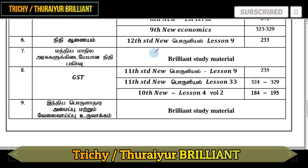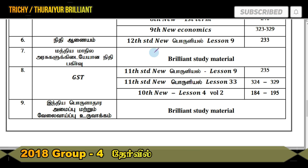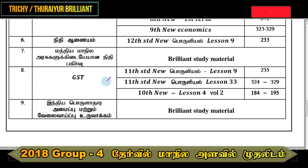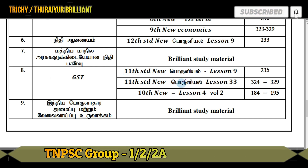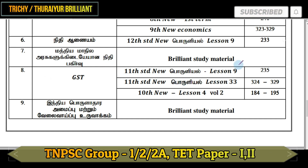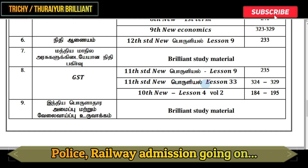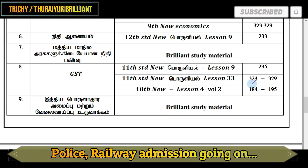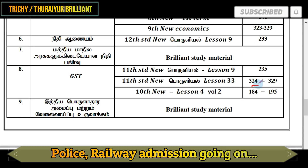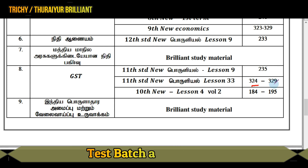In the description, we are going to do the number. For the GST, this is the 11th Standard New Book. In the 11th Standard New Book, in lesson 9: 8–35. In lesson 33: 3–24, 3–29.